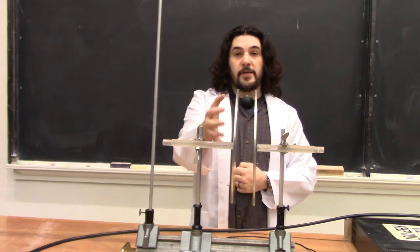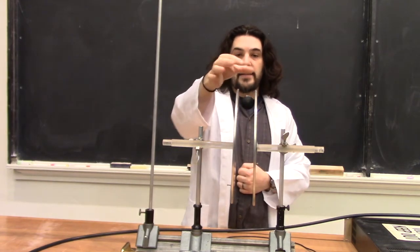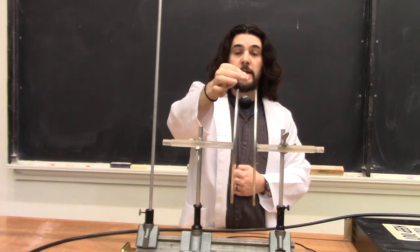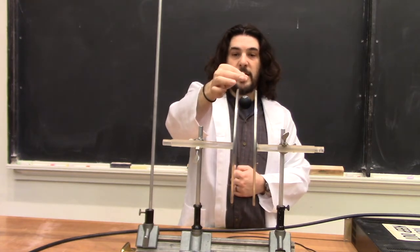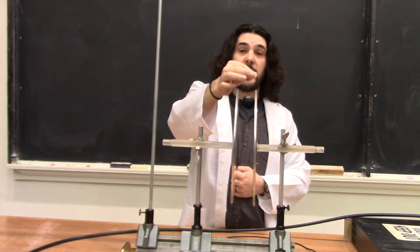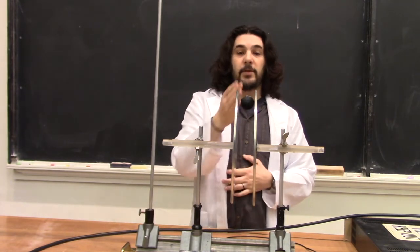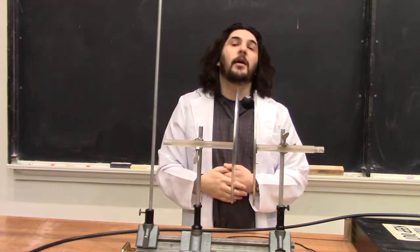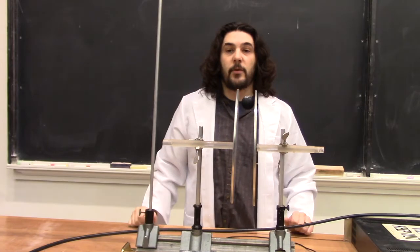When one of these plates gets electrically charged, it will attract this little conducting ball. It will hit it, have some charge deposited on it, and then be repelled to the other plate where it will deposit that charge. It will then be repelled from that plate back to the first, and so on and so forth, until the charges of both plates have been equilibrated.